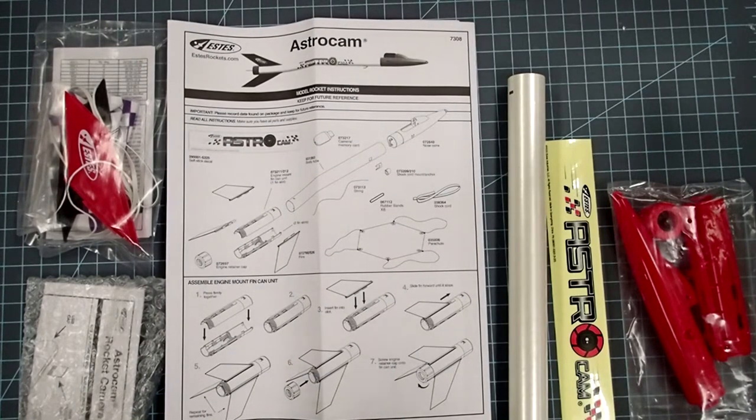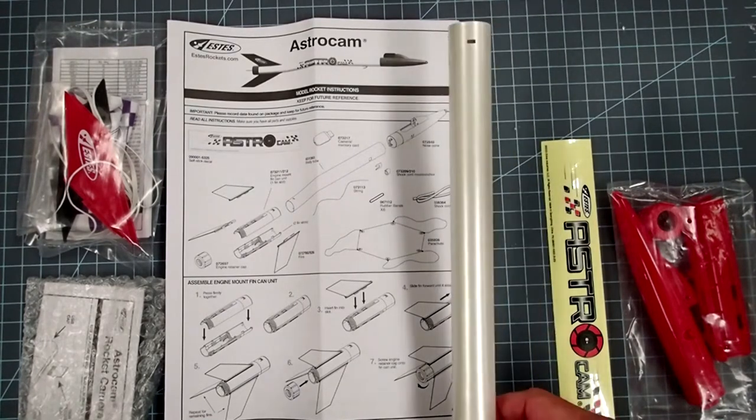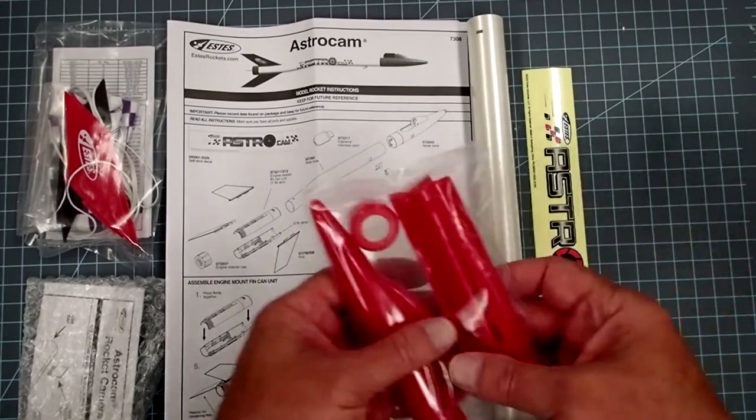This kit does not require any glue or cement, nor does it require any paint, although there are a couple of steps here where you might want to put just a little bit of white glue or wood glue in a few places just to keep things reinforced. But this whole kit is actually meant to snap together. All of the parts come in three sub-assemblies here, and then we simply have the body tube and the self-stick decal.